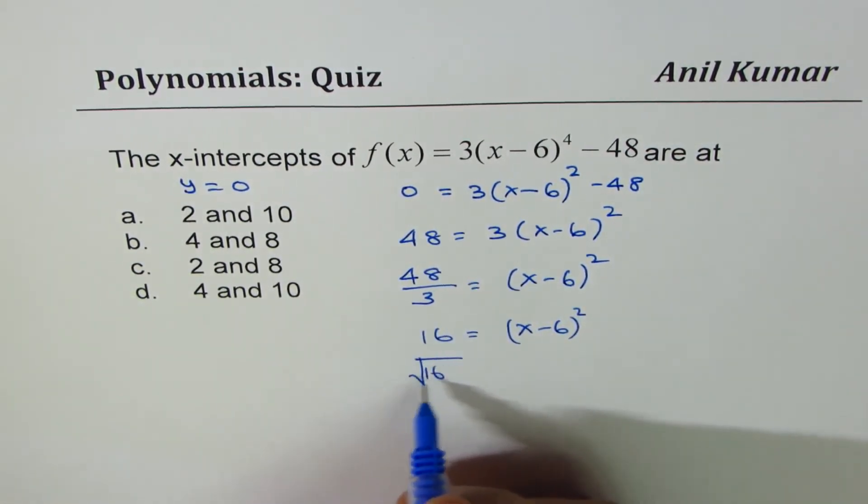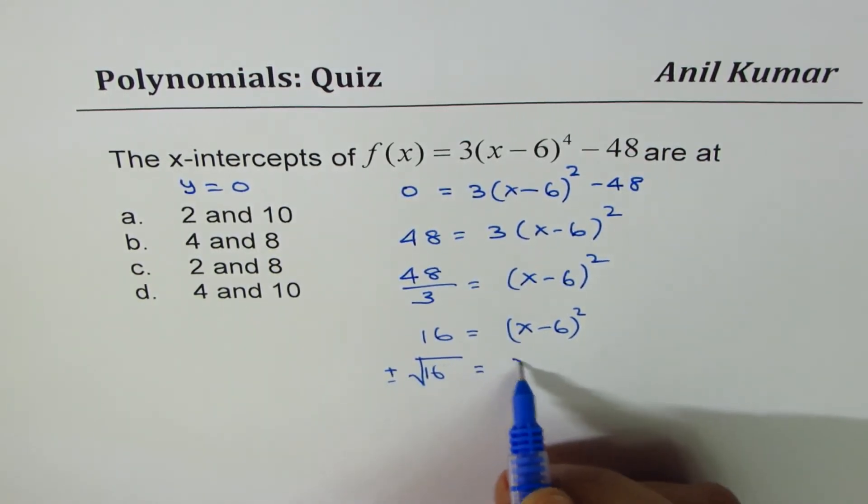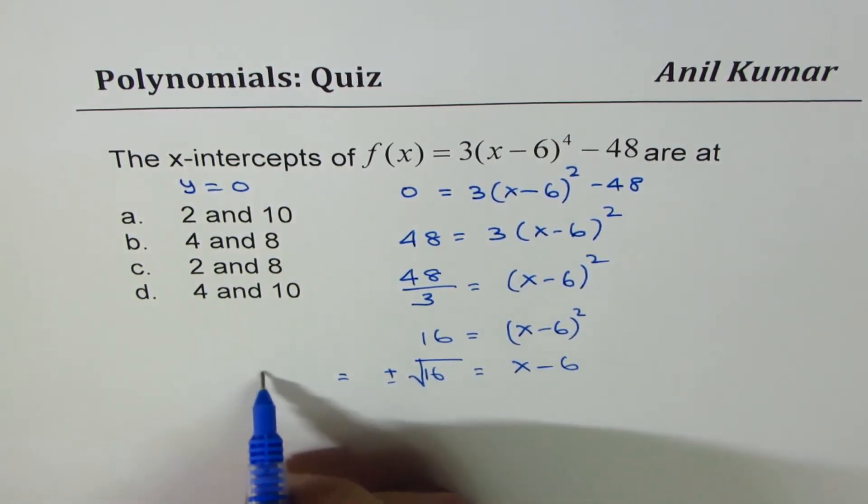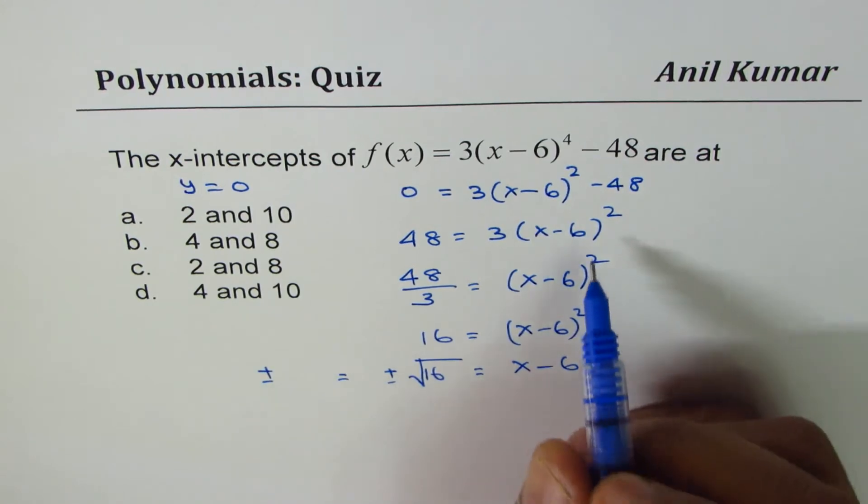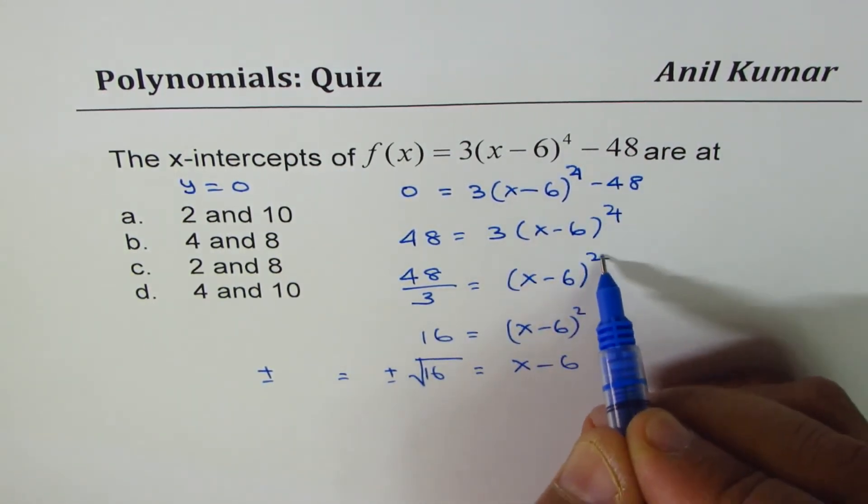So when you square root 16, what do you get? You have to write plus minus. So don't forget this part. And here we get x minus 6. Square root of 16 is 4. So I'm sorry. We started with 4. I'm sorry. So this is 4. Let me just change this.